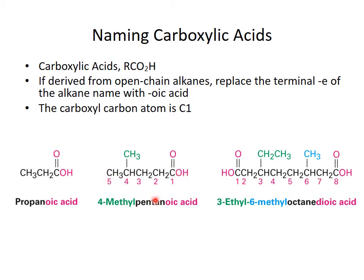If I go to the next compound, I will see that there are five carbons, so it's pentanoic acid, but there is a substituent. The functional group sets the numbering system, so this will be 4-methylpentanoic acid. Further to the right, you'll see this is a dioic acid. Count the carbons and you will find there are eight, so we're going to call this octanedioic acid.